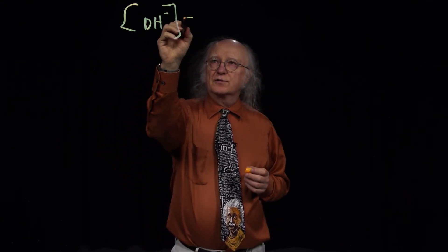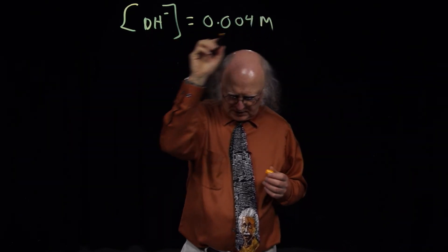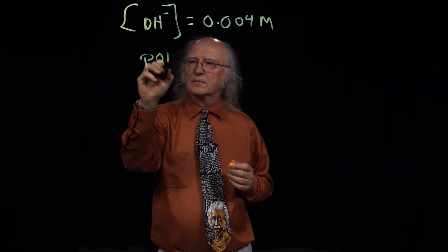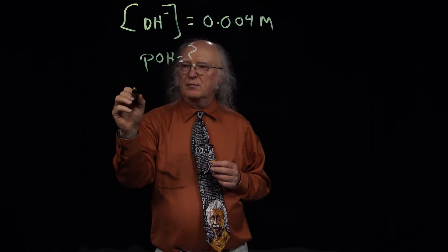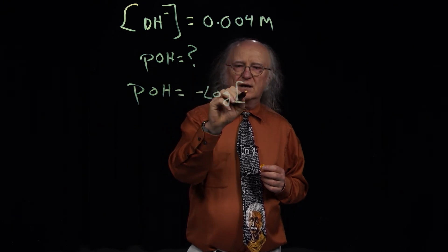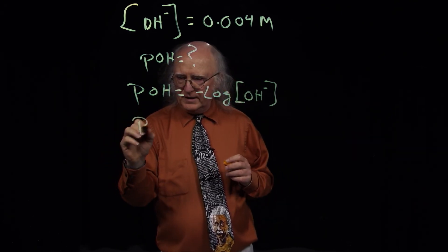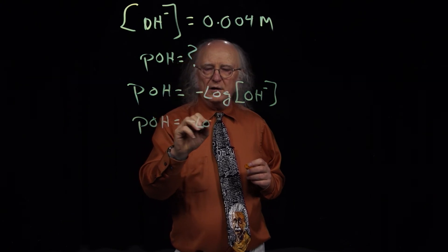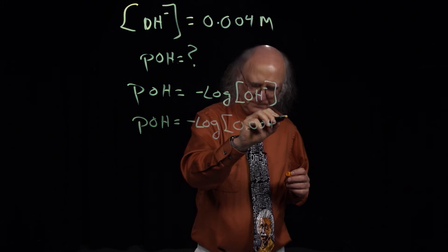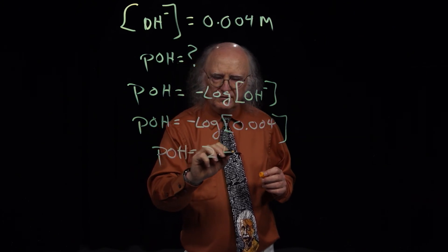For problem number five, if the hydroxide ion concentration is equal to 0.004 molar, what is the pOH? This is a very simple problem. Remember that pOH is equal to the negative log of the hydroxide ion concentration. We have the hydroxide ion concentration right here, so the pOH is equal to the negative log of 0.004. That pOH turns out to be equal to 2.40.